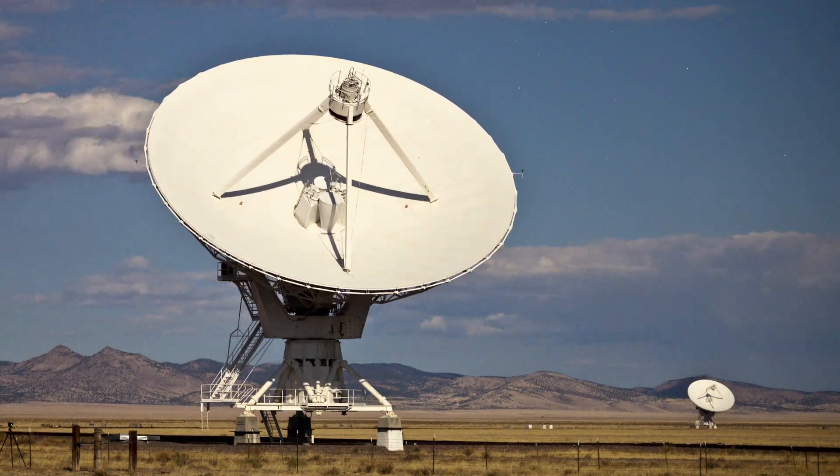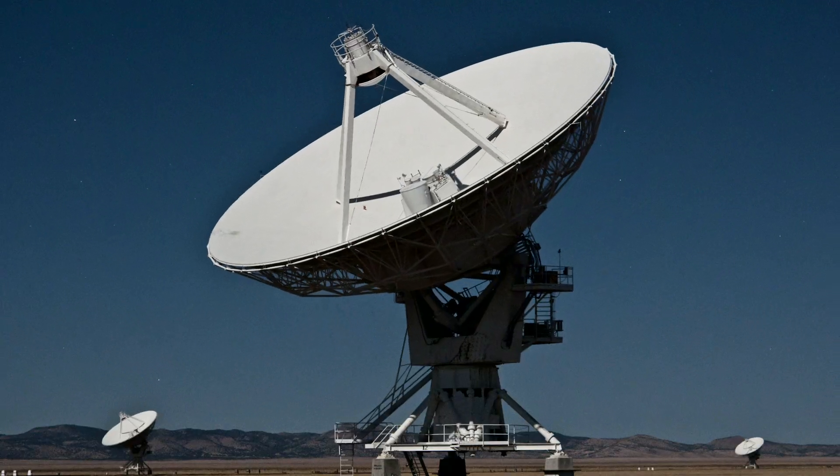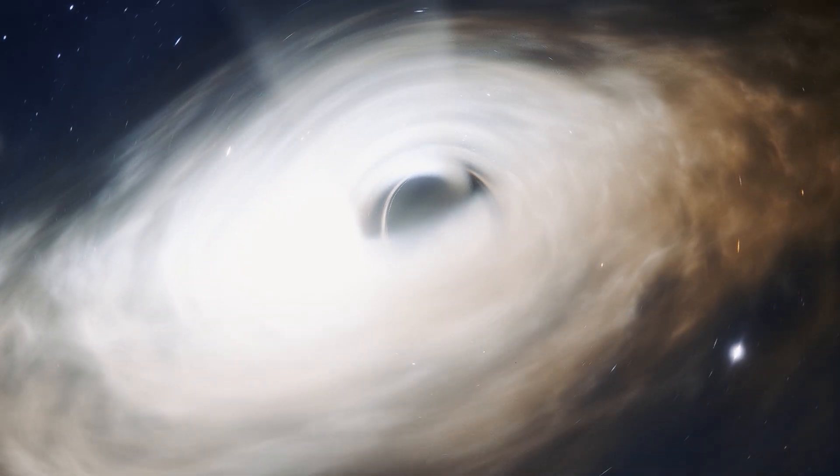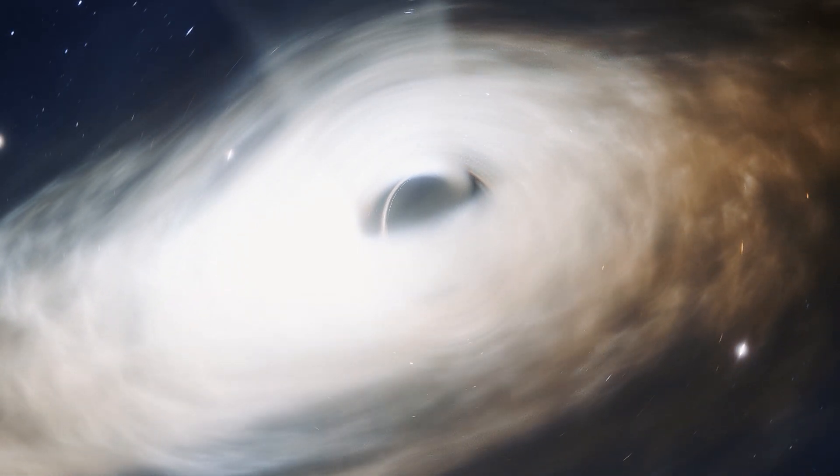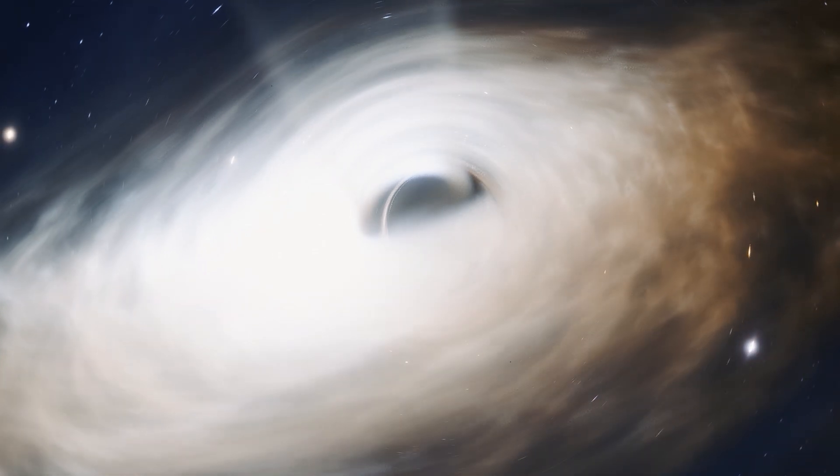Radio telescopes, such as the Very Large Array (VLA), have also been instrumental. They detect radio waves emitted by the jets and outflows from Phoenix A-Star. These observations help us trace the pathways of the jets and understand their impact on the surrounding intergalactic medium.